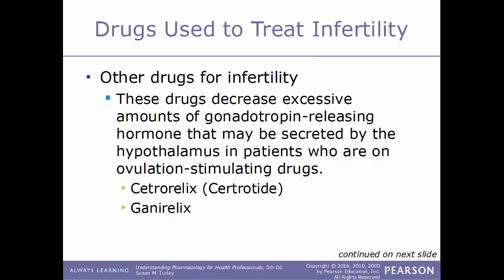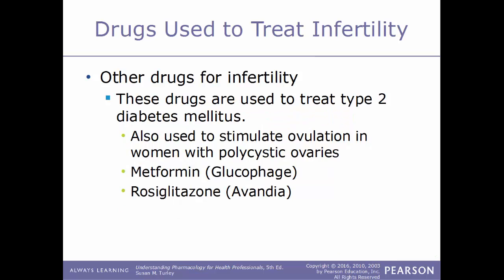Other drugs used to treat infertility include some that decrease excessive amounts of gonadotropin-releasing hormone secreted by the hypothalamus in patients already on ovulation-stimulating drugs — examples are cetrorelix (Cetrotide) and ganirelix. Additionally, drugs normally used to treat type 2 diabetes mellitus are also used to stimulate ovulation in women with polycystic ovaries, such as metformin (Glucophage) and rosiglitazone (Avandia).